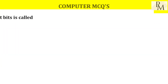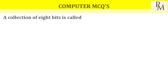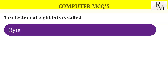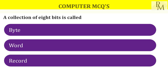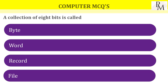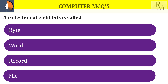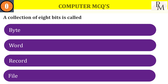A collection of 8 bits is called as? In the previous video we have seen about bytes. Now 8 bits is called as — the options include word, record, file — but these are not related. The answer is byte.